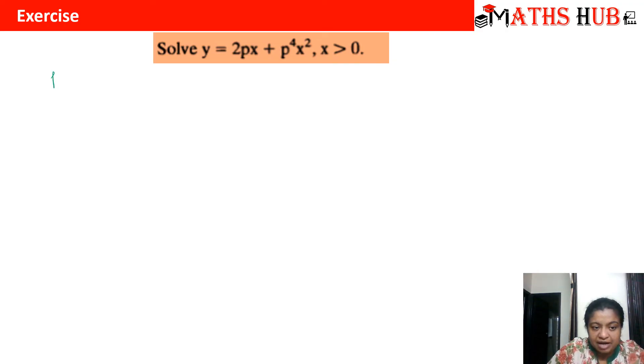dy by dx, I am directly writing it as p. Then on the right hand side we get 2p plus 2x dp by dx plus p to the power 4 times x square. So we have 2x times p to the power 4 plus 4p cube x square times dp by dx.